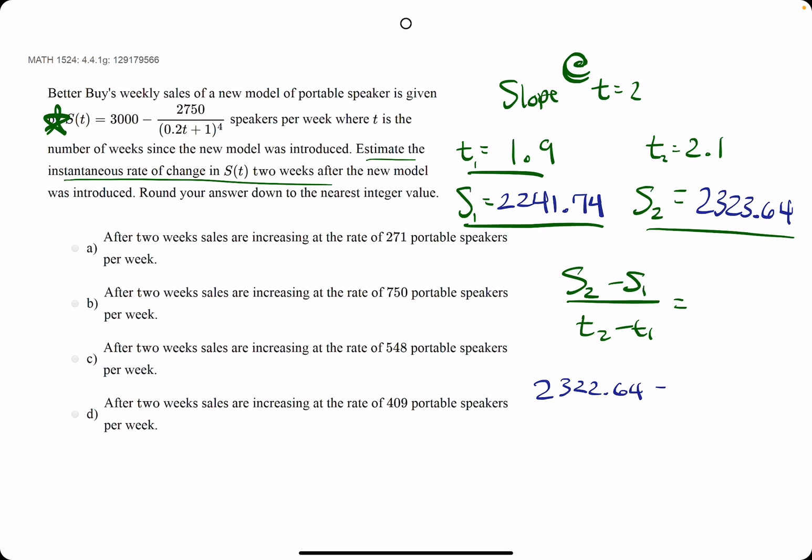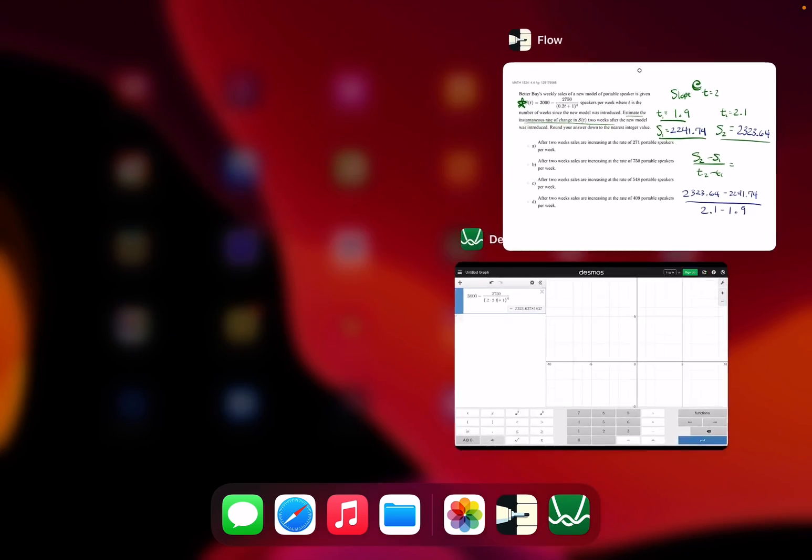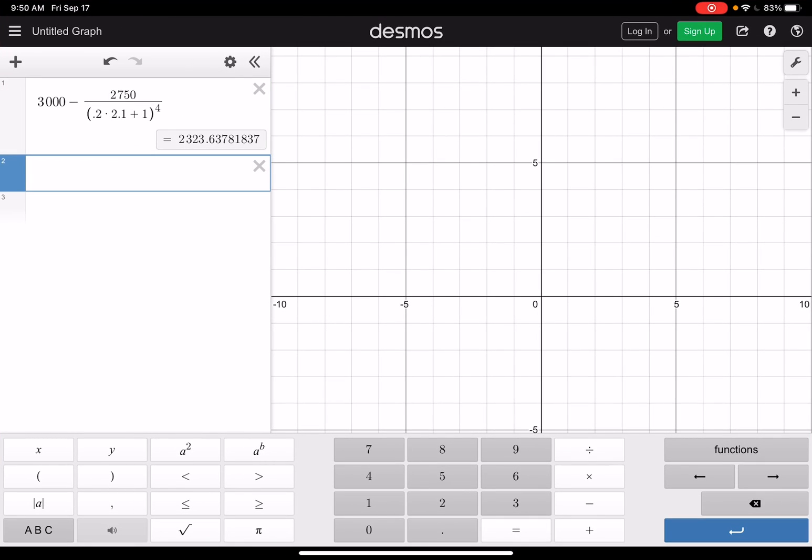Excuse me. So this should be a 3, and this should be 2241.74. And we're dividing by 2.1 minus 1.9. And let's give it a shot. So we need 2241.74.